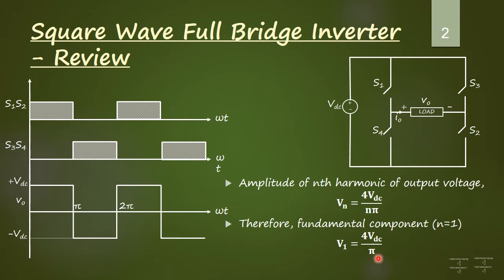Now we move on to selective harmonic elimination scheme. If you look at the waveform of the output voltage of the square wave full bridge inverter, it is a square waveform and not a sinusoidal one. That means it has harmonics. These harmonics must be eliminated before you feed this output voltage to the load. Selective harmonic elimination is a method by which you can control the magnitude of this output voltage as well as eliminate unwanted harmonics.